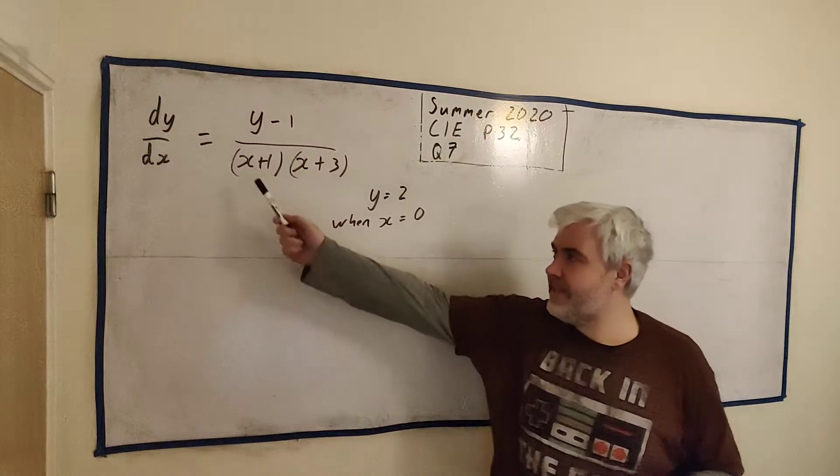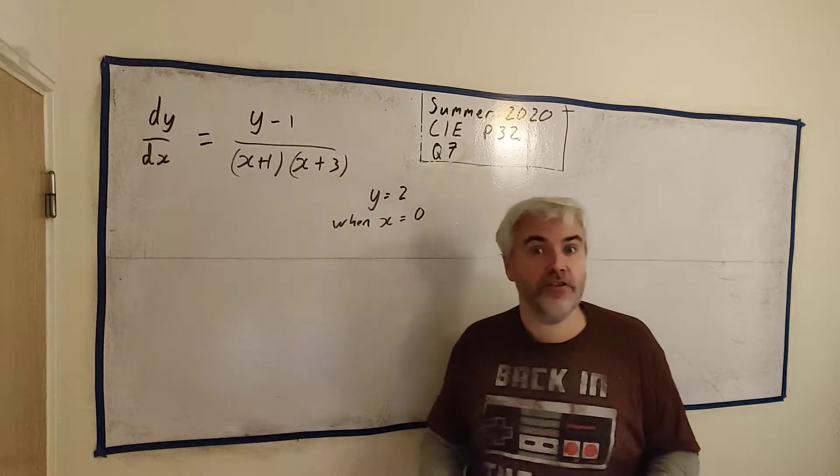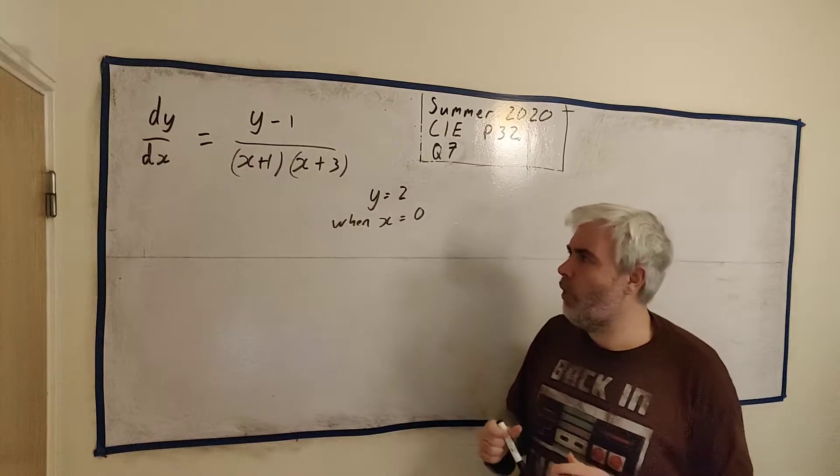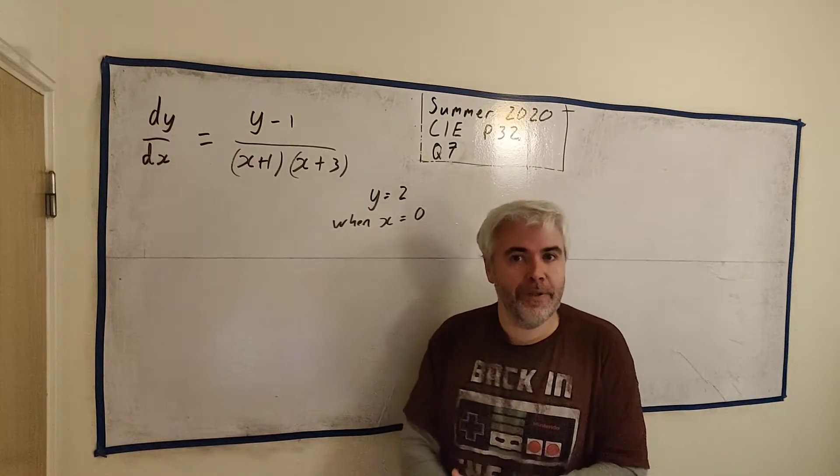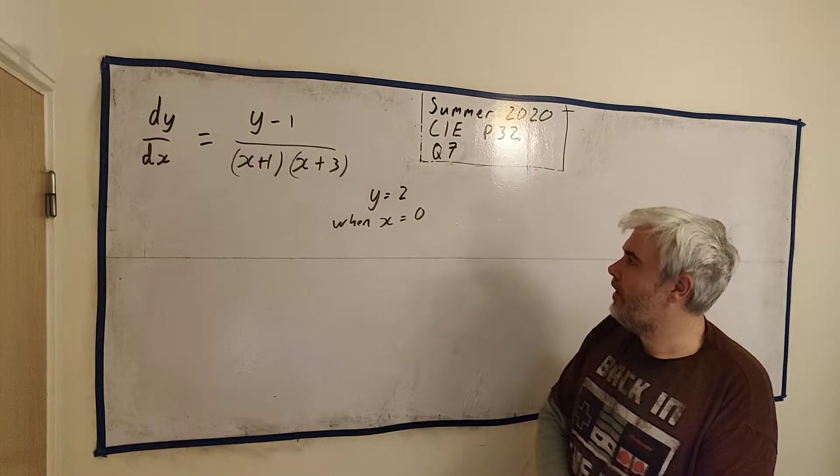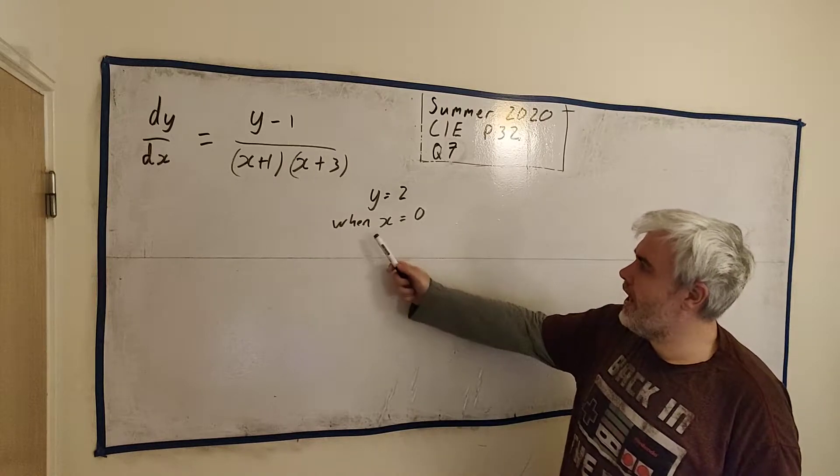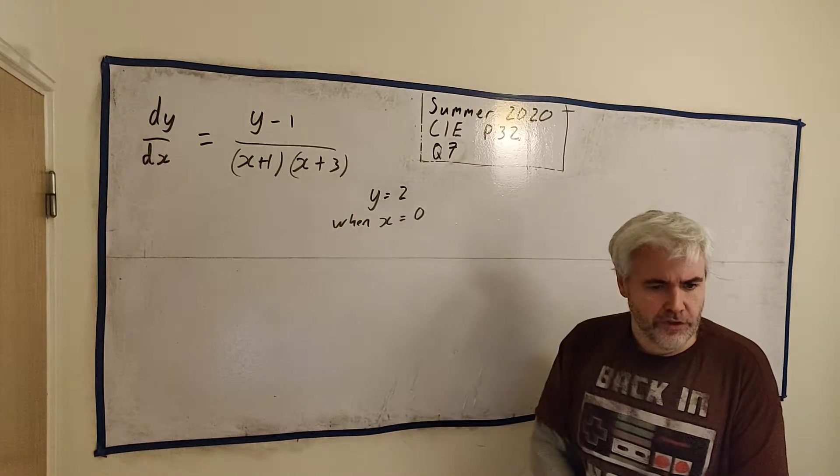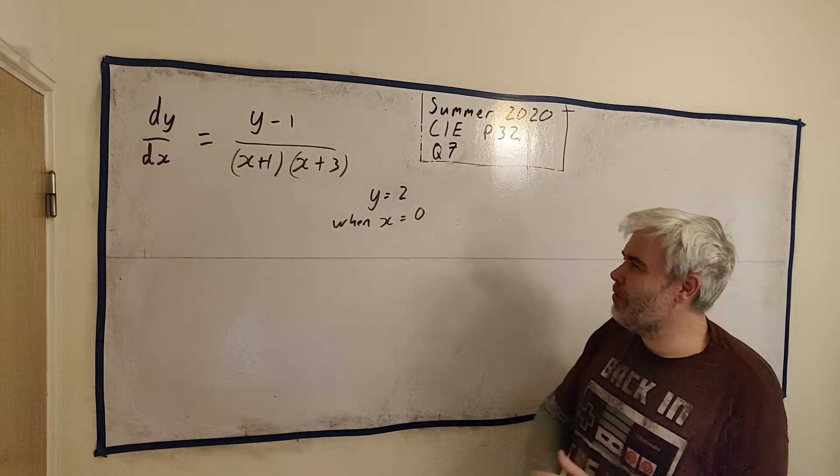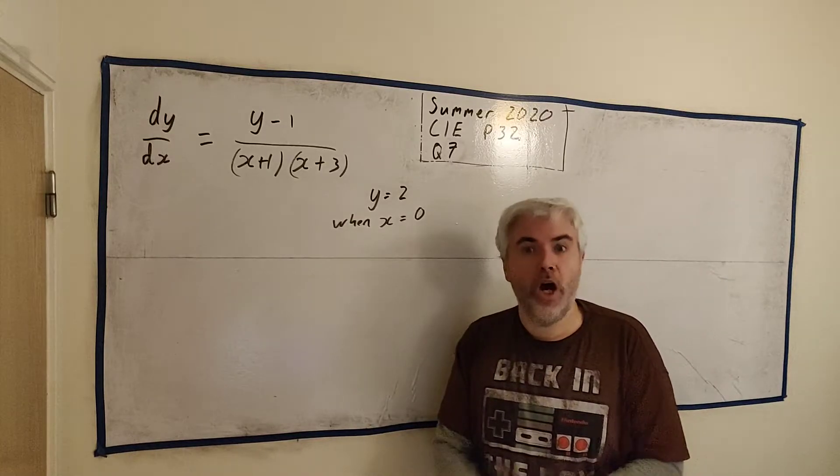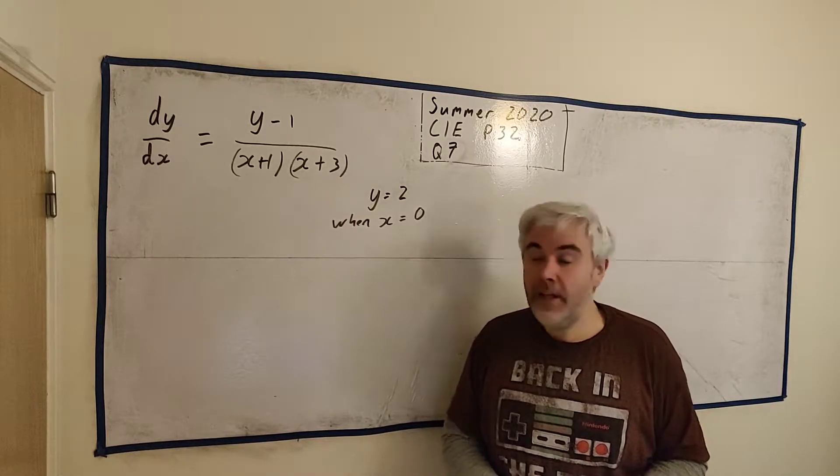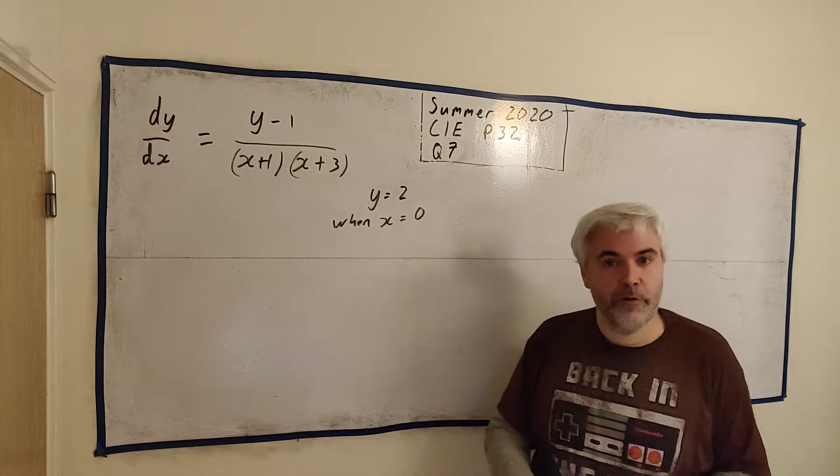In this question, they give us this differential equation here, they ask us to solve it. That means they basically want y equals something in x. And it also tells us when x equals 0, y is equal to 2. That's because we're going to get some constants out when we try and solve this. So we need some information to get rid of those constants.